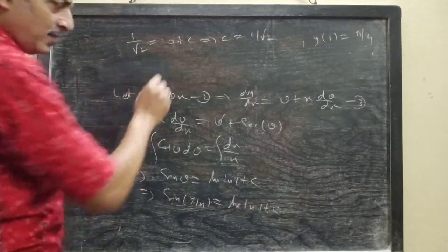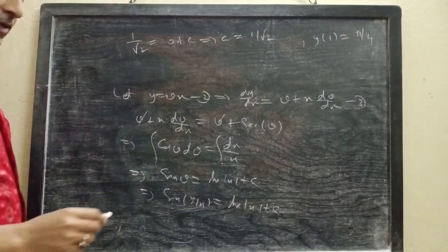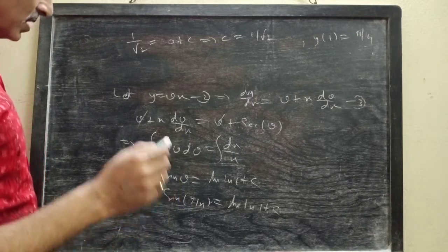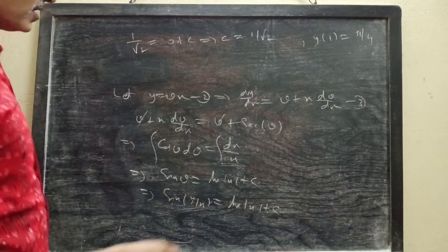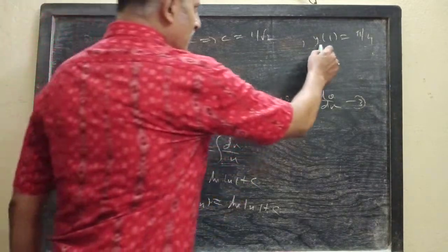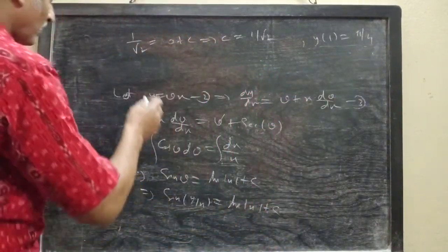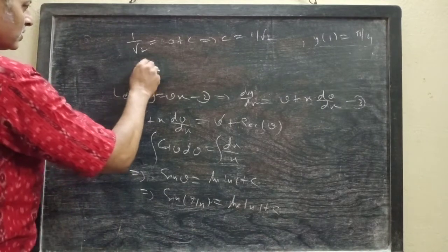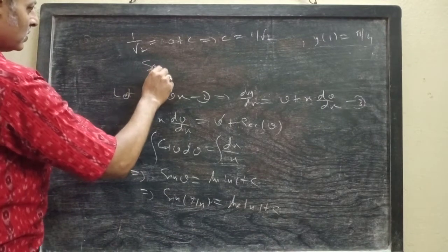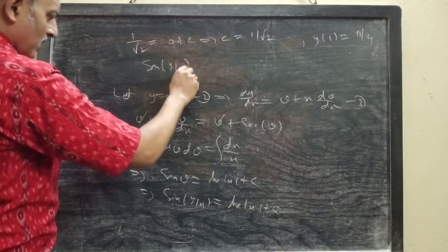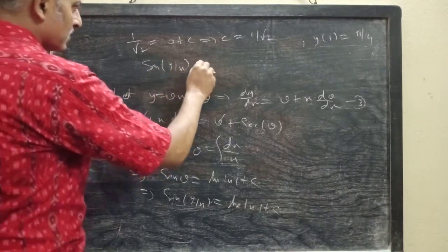Hence the particular solution of the given differential equation satisfying the given initial condition is sin(y/x) equals ln|x| plus 1/√2.